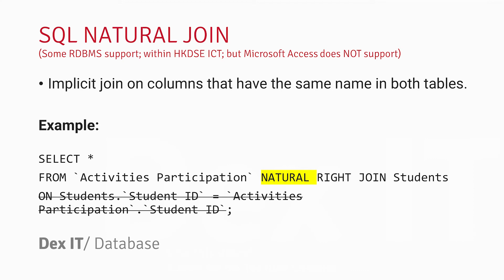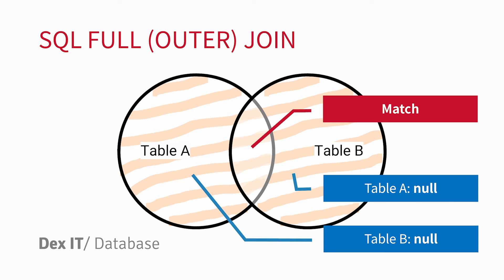Finally, there are two more kinds of joins that I can't demonstrate in Microsoft Access because they are unfortunately not supported there, but they are common in other commercial database systems. One is the natural join — if you use the natural keyword, both tables will automatically try to match columns with the same name, so you don't need to use the ON clause to define the keys. Another is the full outer join: it shows all records from both table A and table B. If there's no match on the table A side, it shows null there, and vice versa. If you've set up entity integrity, the use case for full outer join is quite rare, but it exists in many commercial database systems.